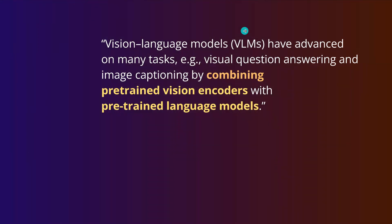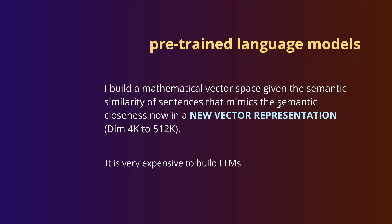With VLMs, you combine a pre-trained vision encoder with a pre-trained language model. But these are not on equal footings — they are different objects. The pre-trained language model, the LLM, is very expensive to build. You take a lot of sentences and build a mathematical vector space given the semantic similarity of the sentences, mimicking semantic closeness in a new vector representation.